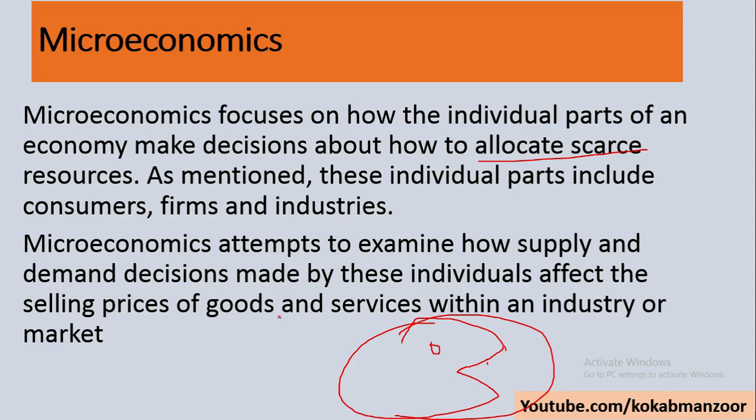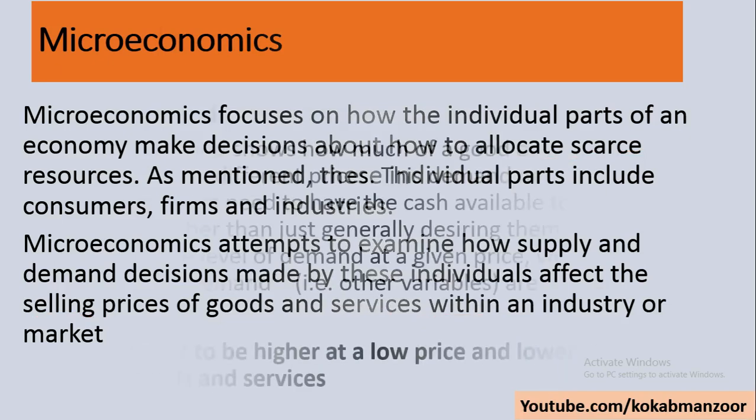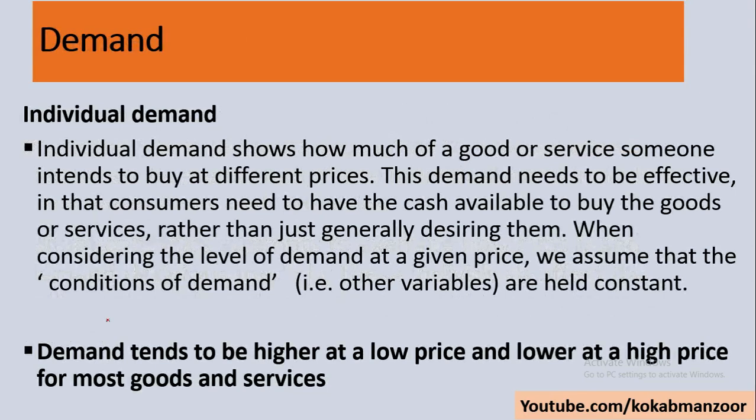Microeconomics examines how supply and demand decisions made by individuals affect the selling price of goods and services within an industry. We look at how demand and supply made by individuals affect selling prices — what happens when demand increases, when supply increases, and how that affects prices. First we'll discuss demand.